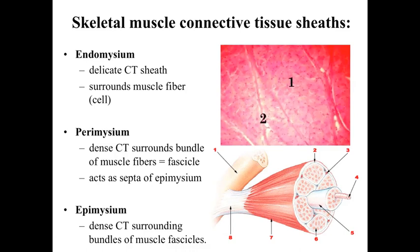The larger connective tissue boundaries of the perimysium help delineate the different bundles or fascicles within a muscle. The perimysium actually acts as septa or walls of the outer layer. That outer layer is a dense connective tissue epimysium, which surrounds and holds our gross anatomical muscle together, pulling bundles of muscle cells together and ultimately anchoring them into the tendons at the insertion and origin.